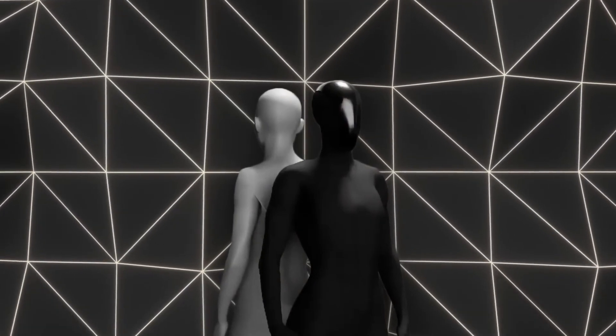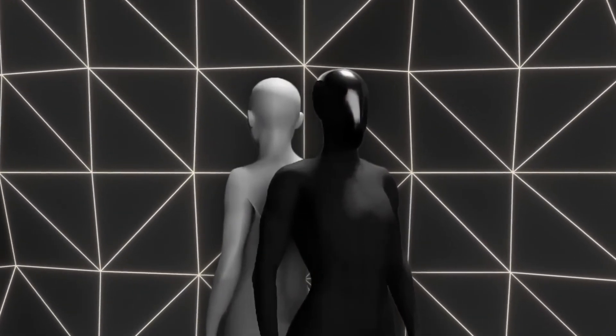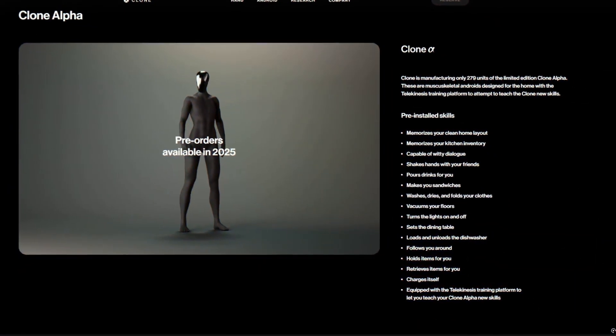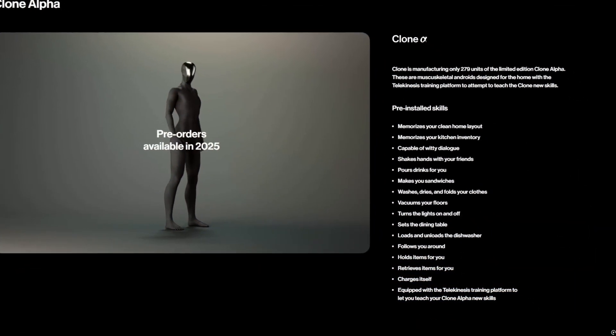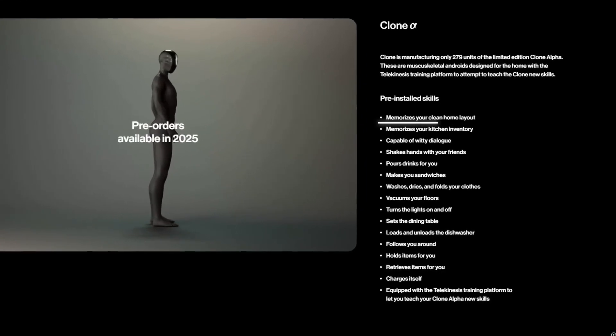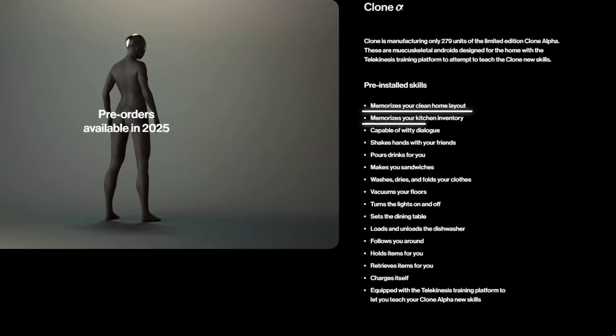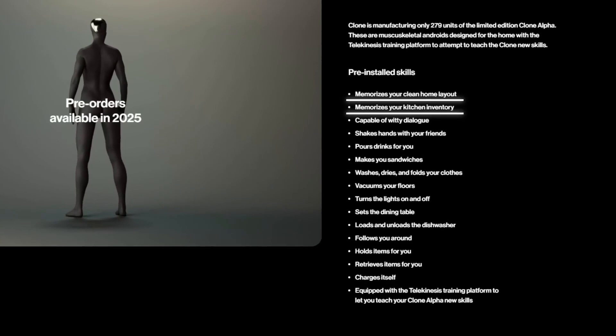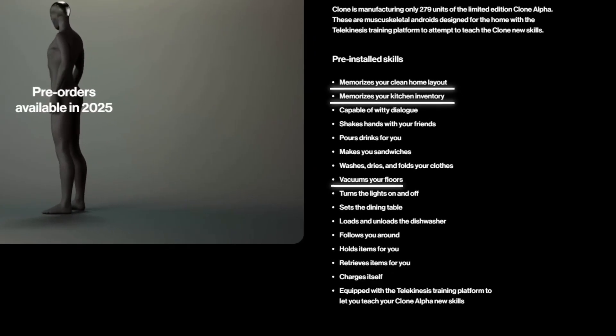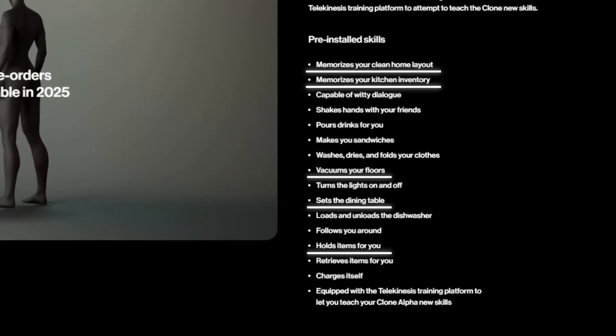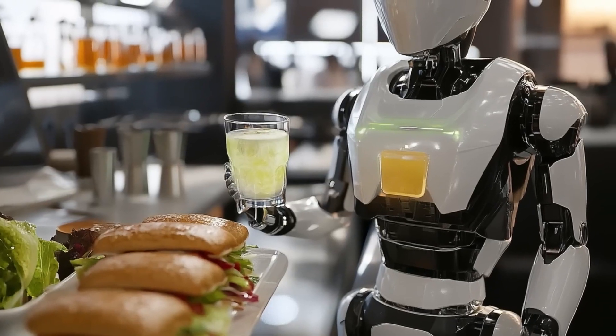So what can this robot actually do? Here's where things get really exciting. Clone Alpha comes preloaded with 16 skills designed to make your life easier. It can memorize the layout of your home, keep track of your kitchen inventory, and handle household chores like vacuuming, setting the dining table, and even folding your clothes. It can pour drinks and make sandwiches, too.